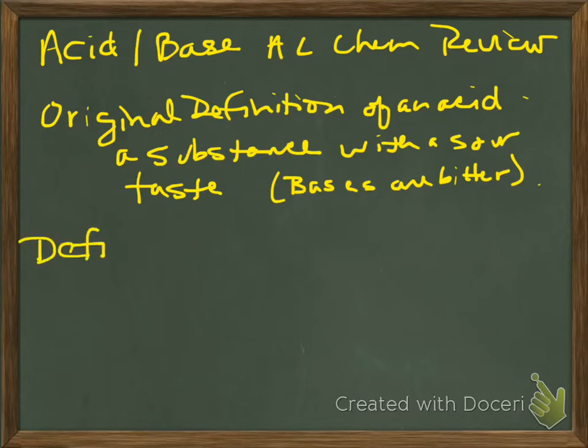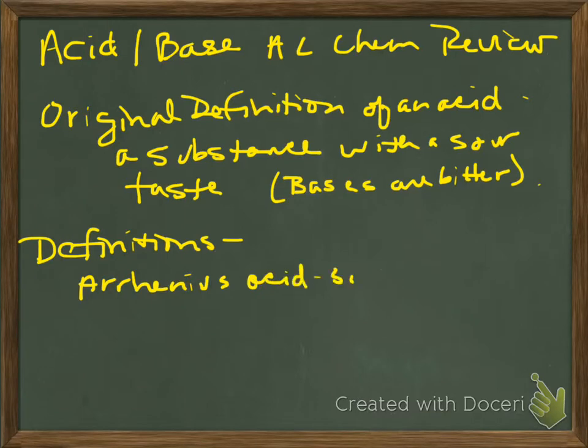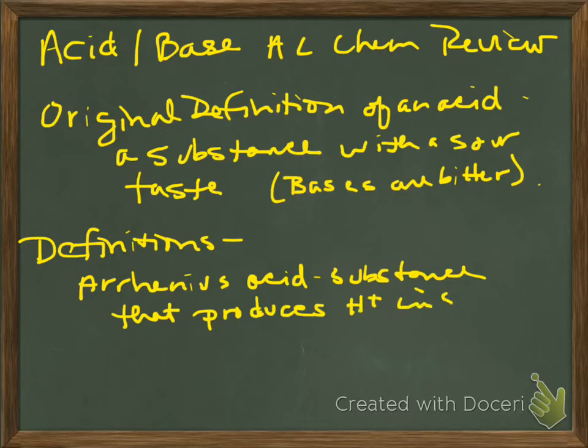First one is the Arrhenius acid, and this is a substance that produces H-plus in solution. And remember, this H-plus really exists as the hydronium ion in water. And this, I need to add, this is aqueous solution.